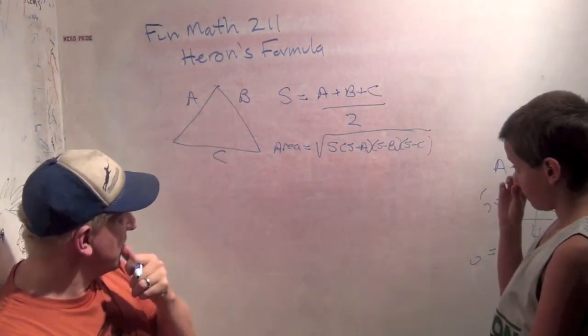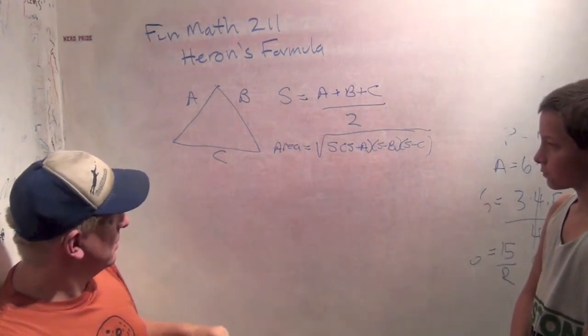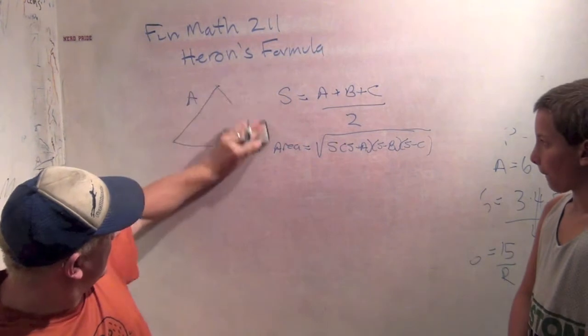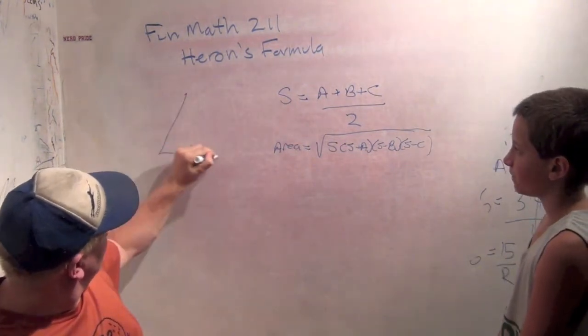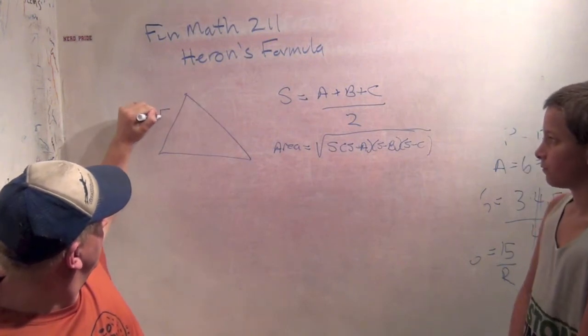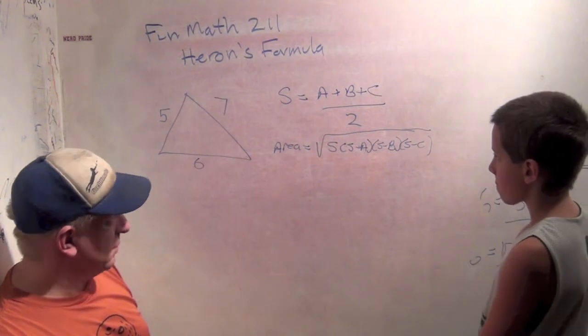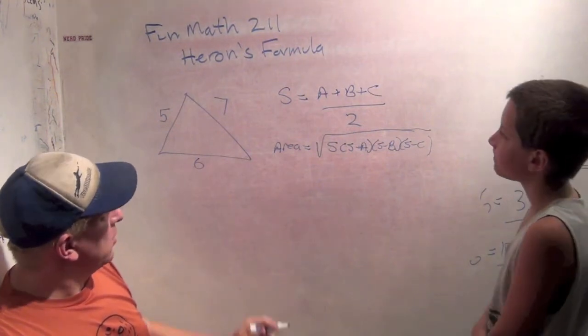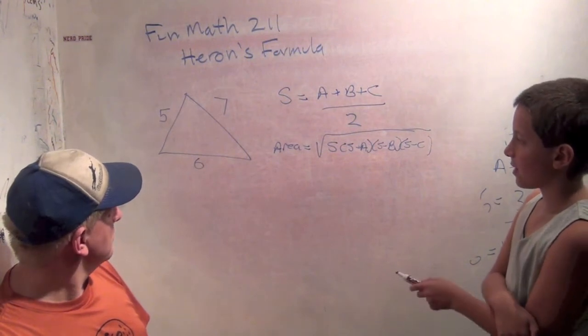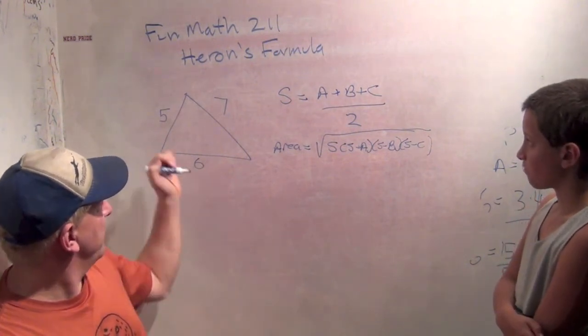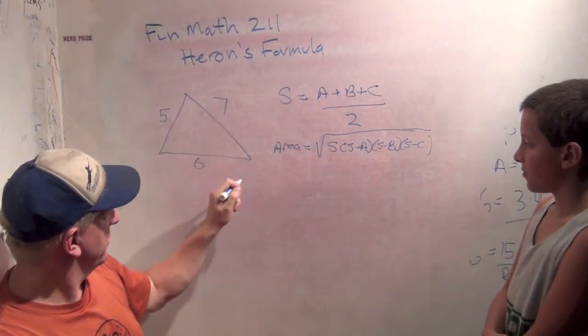This helps you find the area of any triangle where all you know are the side lengths. So if I have a triangle with side lengths 5, 6, and 7, what's the perimeter? It is 18. 5 plus 7 is 12, plus 6 is 18. So what would S be? S would be 9.